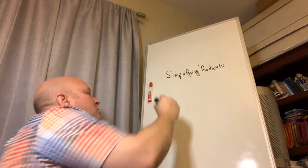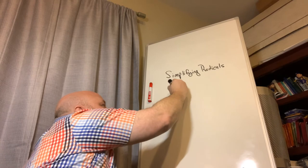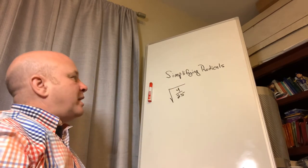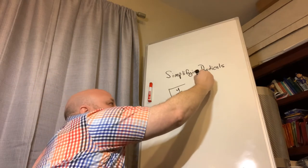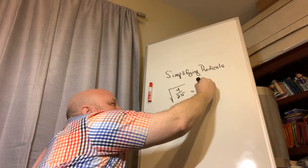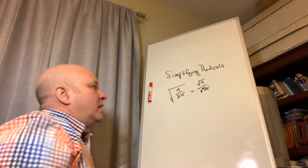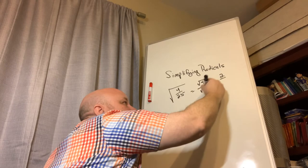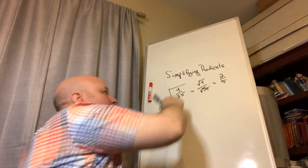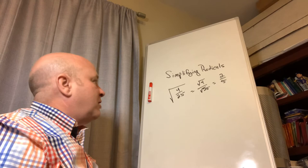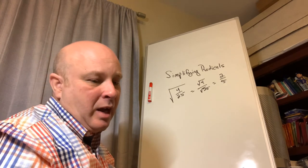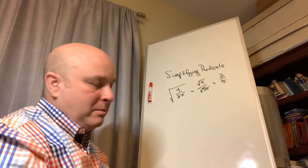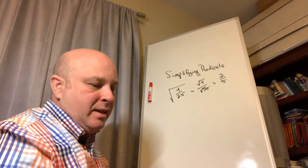Radicals also work with fractions. The square root of 4/25 is the same as the square root of 4 divided by the square root of 25. The square root of 4 is 2 and the square root of 25 is 5, so the square root of 4/25 equals 2/5.